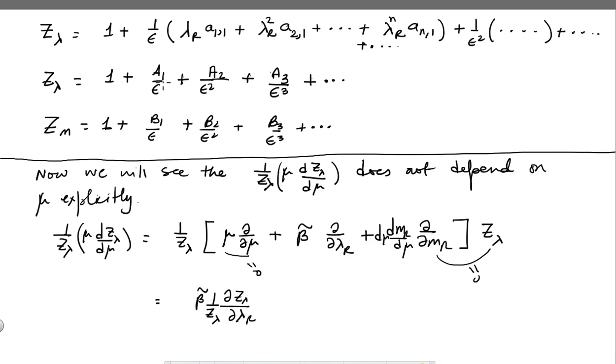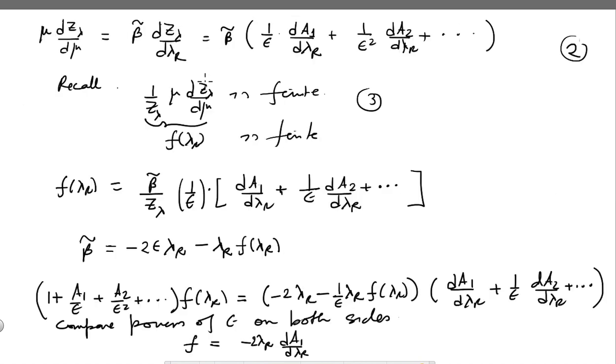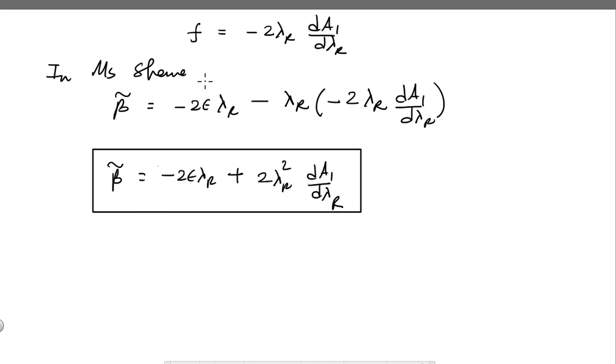This A1 gets contributions from all orders in perturbation theory. When you do a two loop calculation you also generate double pole and a single pole, that is also included. There are lambda r terms, lambda r square terms, lambda r cube terms and so forth. We saw that the beta function gets contributions only from the single pole terms and the higher order pole terms do not contribute.